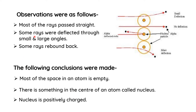The second observation — some rays were deflected through small and large angles — leads to the conclusion that there is something in the center of an atom called the nucleus. Third, some rays rebounded back, and the conclusion is that the nucleus is positively charged — protons are inside the nucleus and are positively charged. Alpha particles are also positively charged, so they repel each other, which is why those alpha particles bounce back. These three observations and conclusions are very, very important.